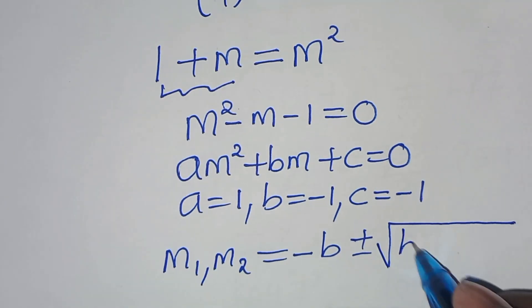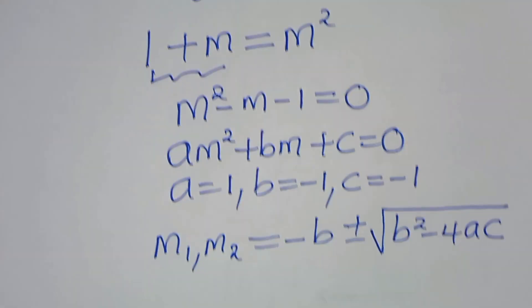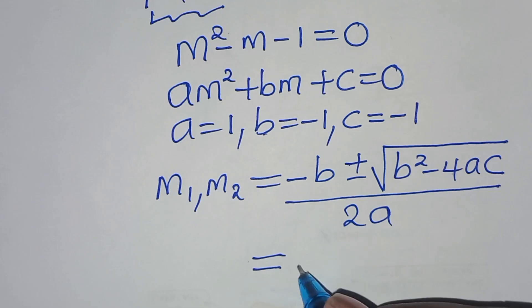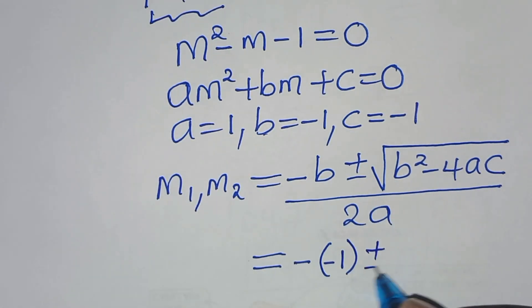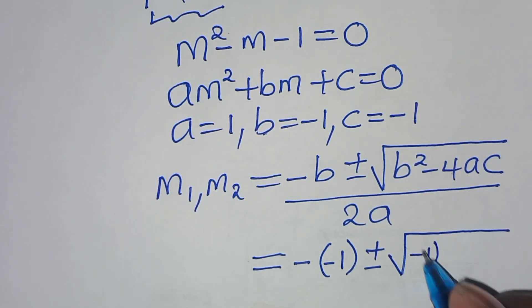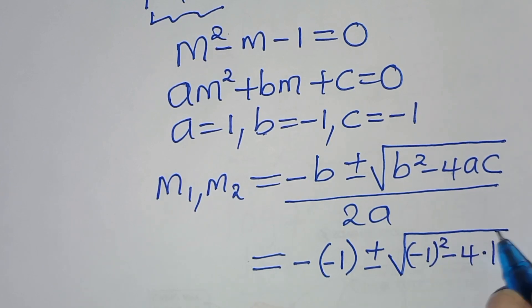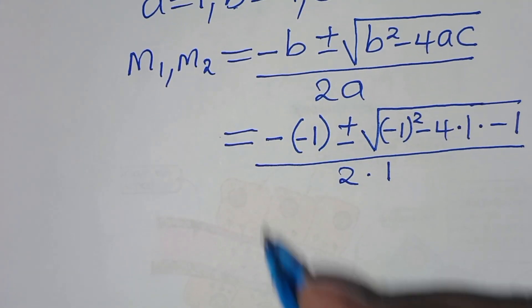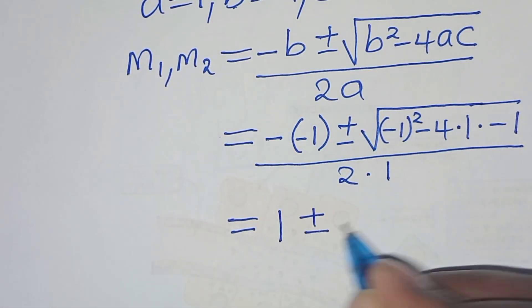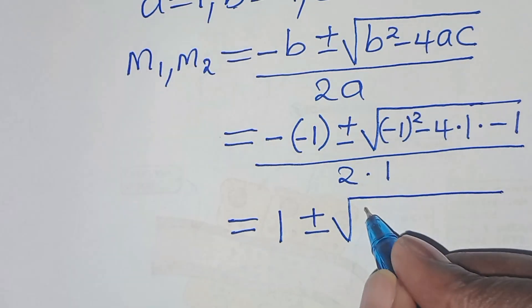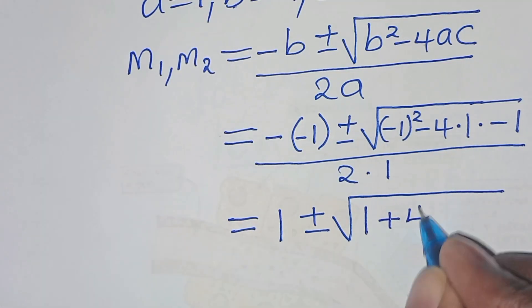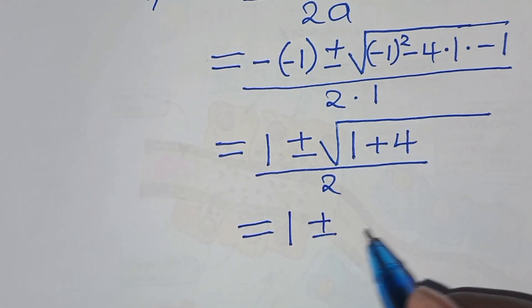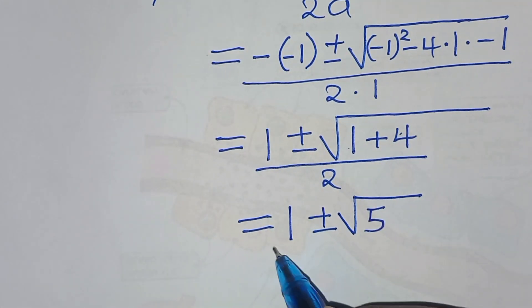This is a quadratic equation of the form Am² + Bm + C = 0. From this equation, A equals 1, B equals negative 1, and C equals negative 1. To solve for m, we apply the quadratic formula: m equals negative B plus or minus the square root of B squared minus 4AC, all divided by 2A. Substituting: we get minus(−1) plus or minus the square root of (−1)² minus 4(1)(−1), divided by 2(1). This gives 1 plus or minus the square root of 1 plus 4, over 2, which is 1 plus or minus the square root of 5, over 2.